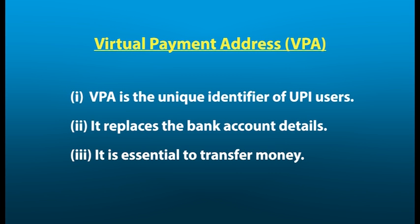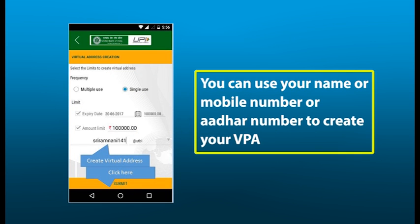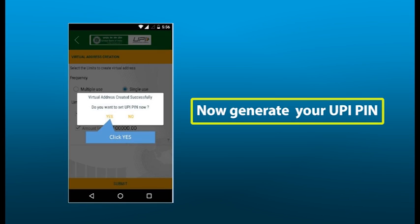Virtual Payment Address is given to all the users of UPI. It is a unique identifier and it is essential to transfer funds from the bank account — it is used as the identification of the user. In order to create a virtual account, for example, if my name is Anuradha, it could be Anuradha@SBI, or my 10-digit mobile number@SBI, or my Aadhar card number@SBI.